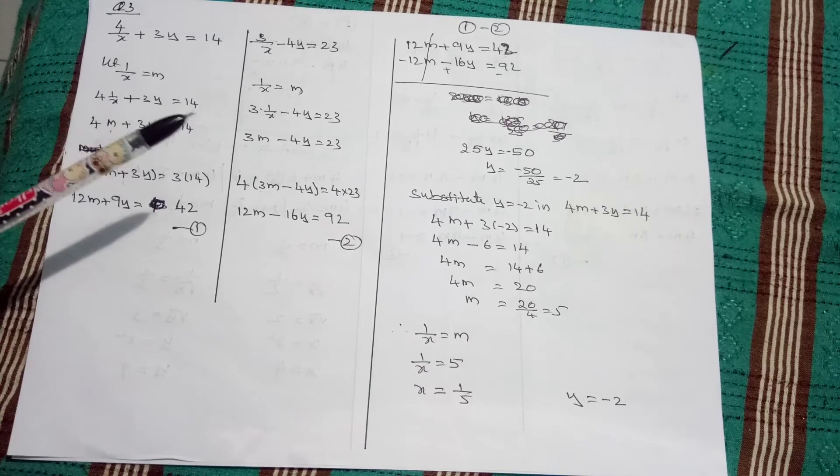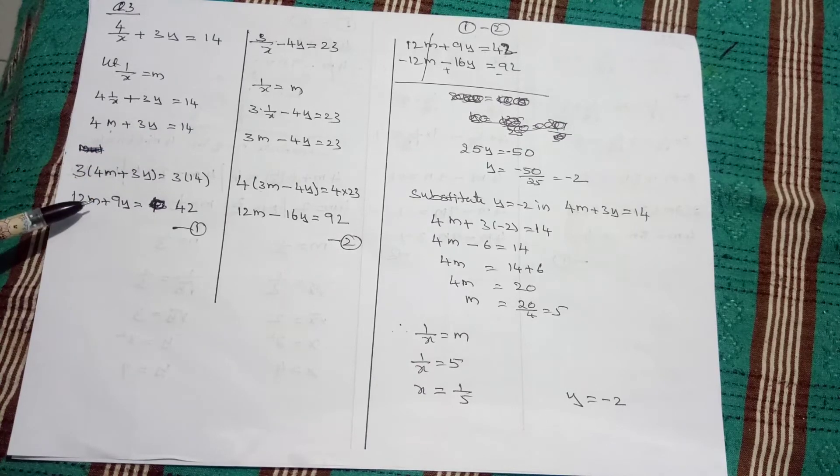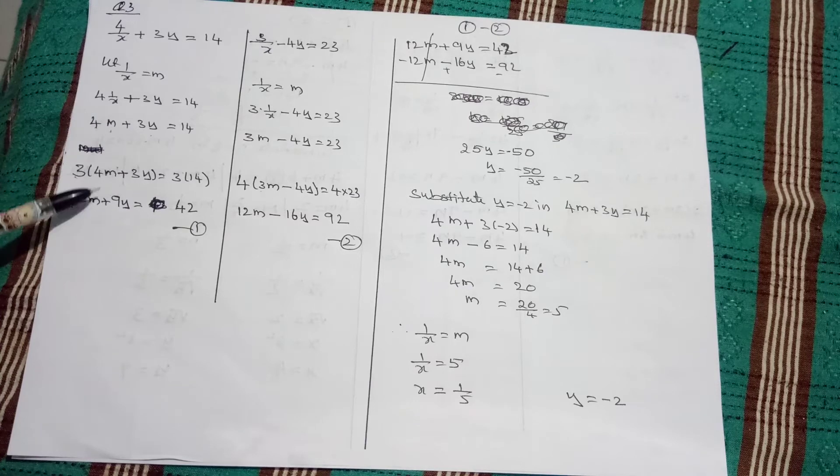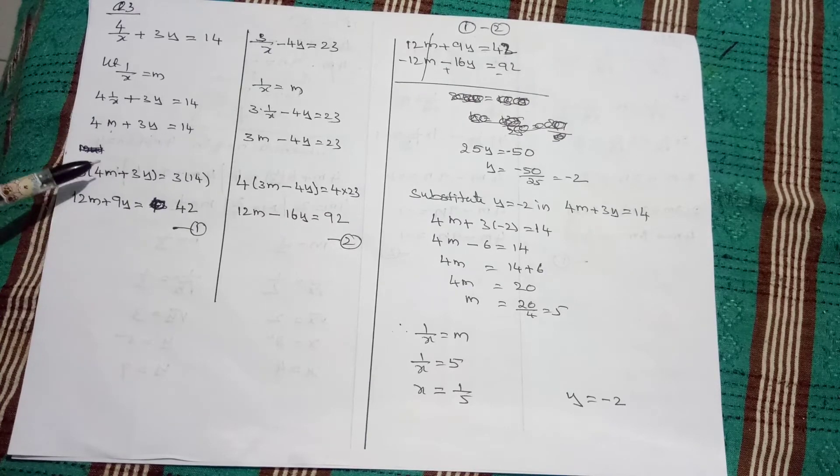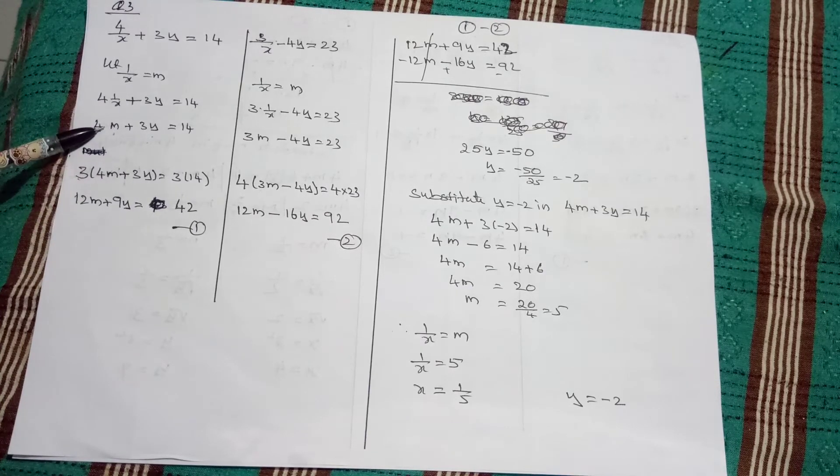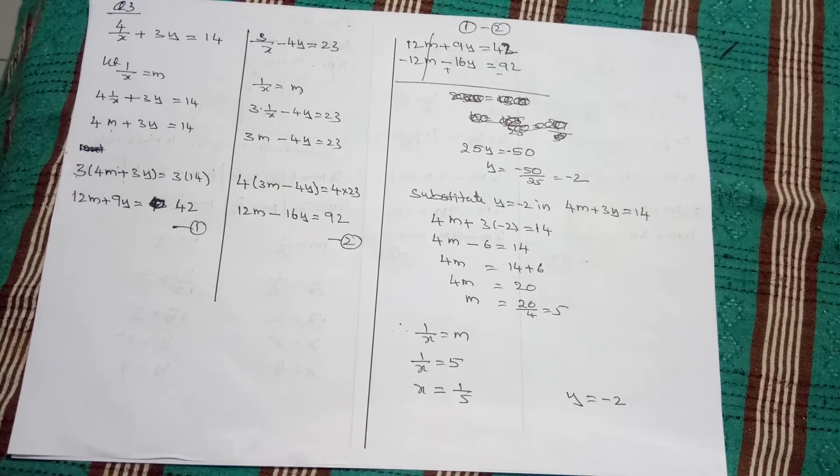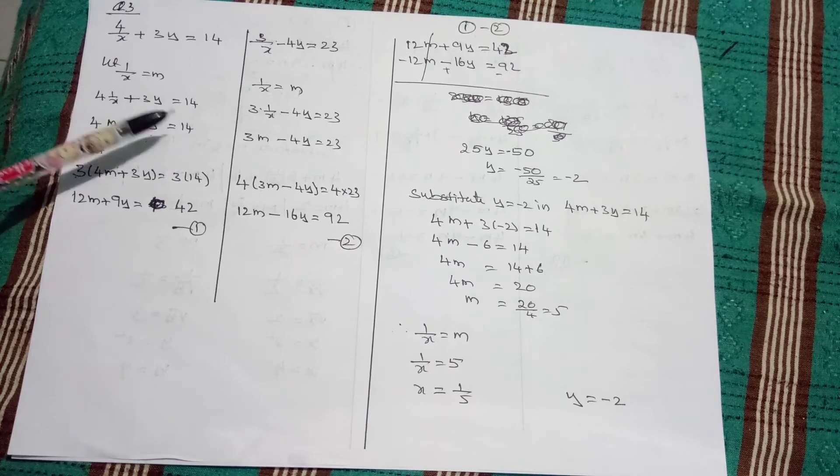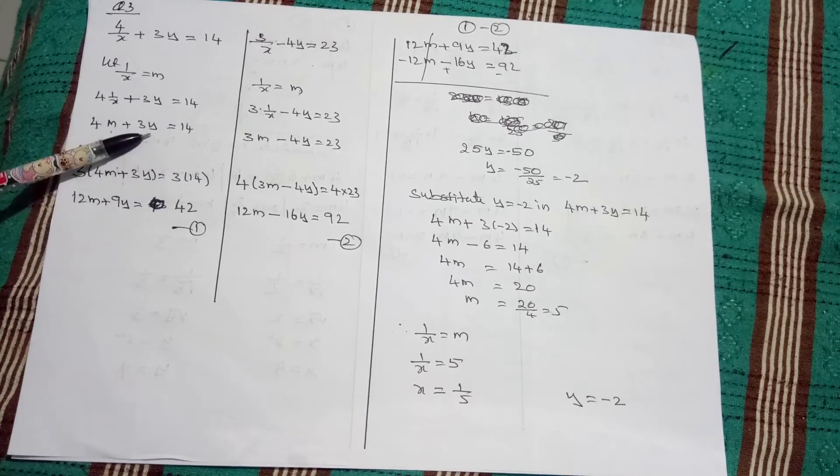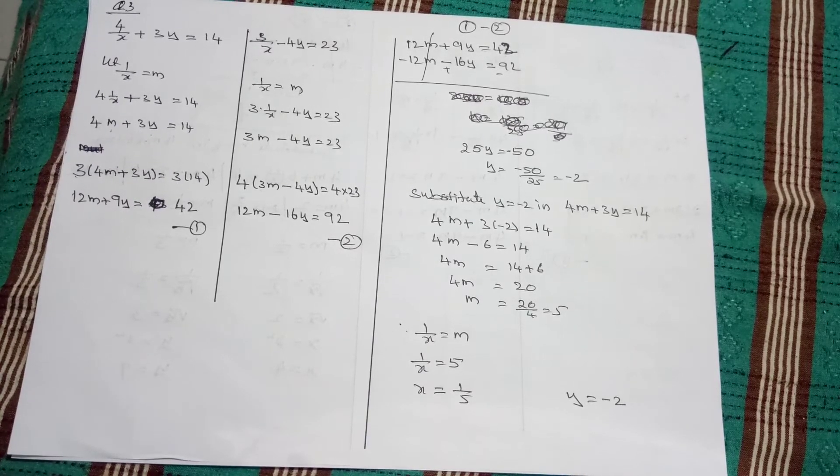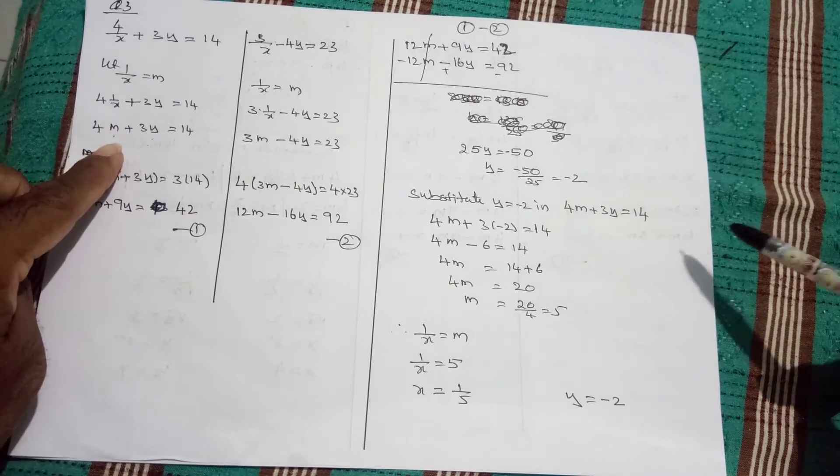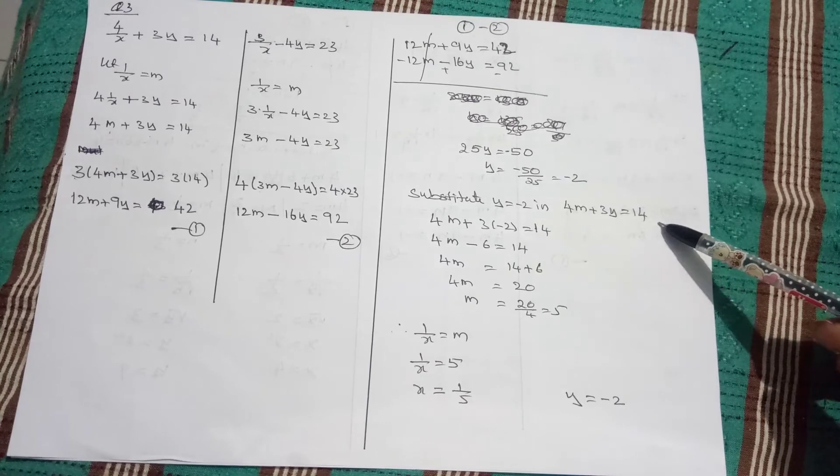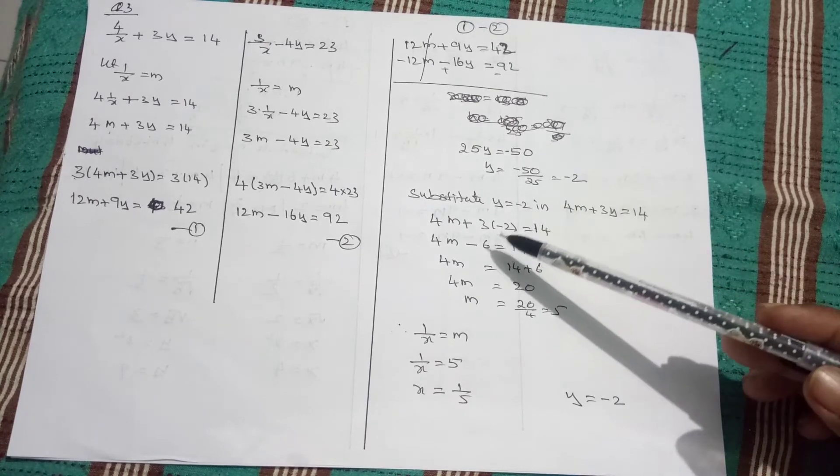So, we got the y value. Substitute y value in any equation. This equation is similar to this equation because they are equations. LHS and RHS look like they change but they are equal. So, I took this equation: 4m plus 3y equals 14. Substitute y value here.